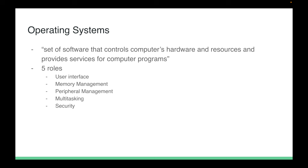The next section is about operating systems. An operating system is defined as a set of software that controls a computer's hardware and resources and provides services for computer programs. Broadly, there are five roles that operating systems play: user interface, memory management, peripheral management, multitasking, and security.